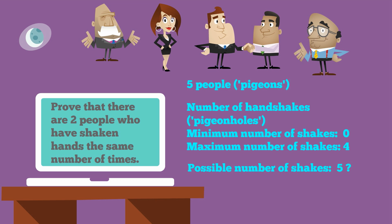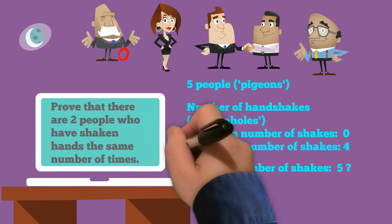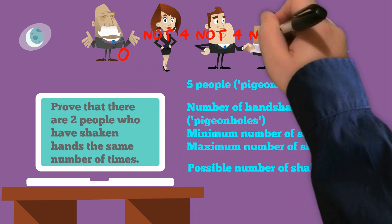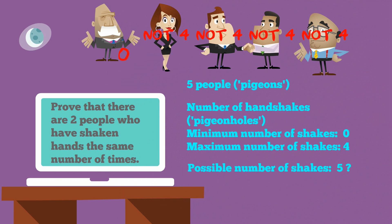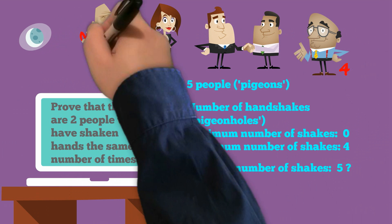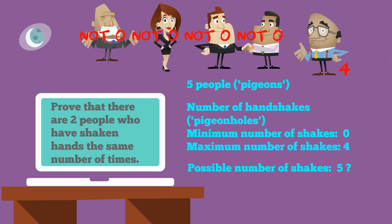The key insight here is that we can't have someone having zero handshakes and someone having four handshakes at the same time. If someone has zero handshakes, it's impossible for anyone else in that room to have four handshakes. And if someone has four handshakes — meaning they shook everyone's hand — it's impossible for someone else to have zero handshakes, because that person with four shakes shook everyone's hand. So that's the spirit of what we're going to try to do in the solution.